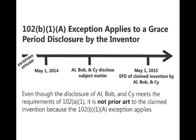Let's take some examples. Here's a little flow diagram with Al, Bob, and Psi. May 1 is the year before you file it. Your grace period goes from May 1, 2015 back to May 1, 2014. If you disclose it sometime in that grace period, then the exception is good because you're within the grace period. The examiner cannot use this as prior art because it's your own disclosure within the grace period. We refer to that as a 102 B1A exception — you need to know it's a 102 B1A exception specifically.